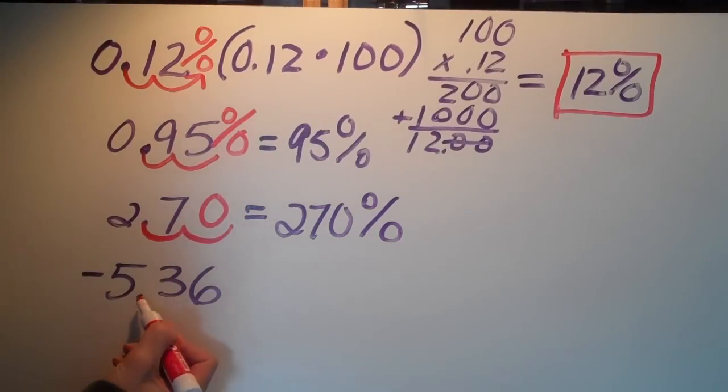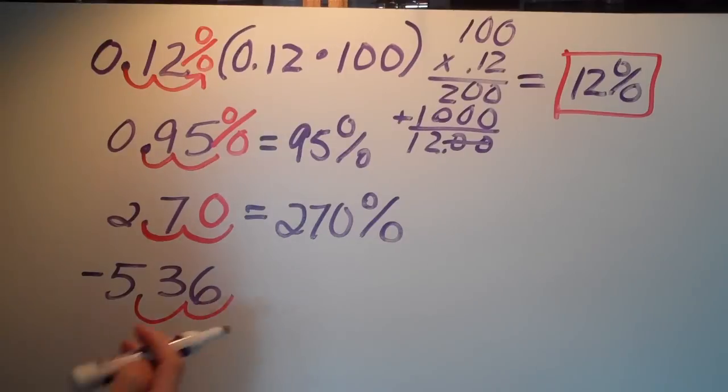Okay, and here's the next one, or our last one, doing the same exact thing, moving two places to the right, and then it becomes negative 536 percent.